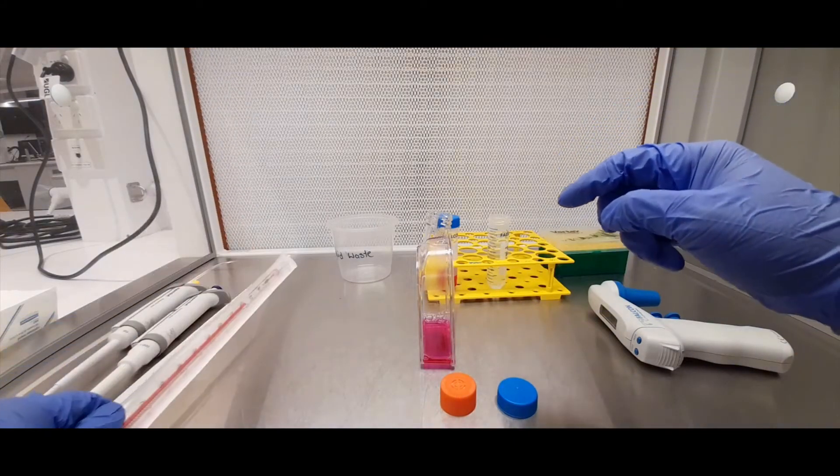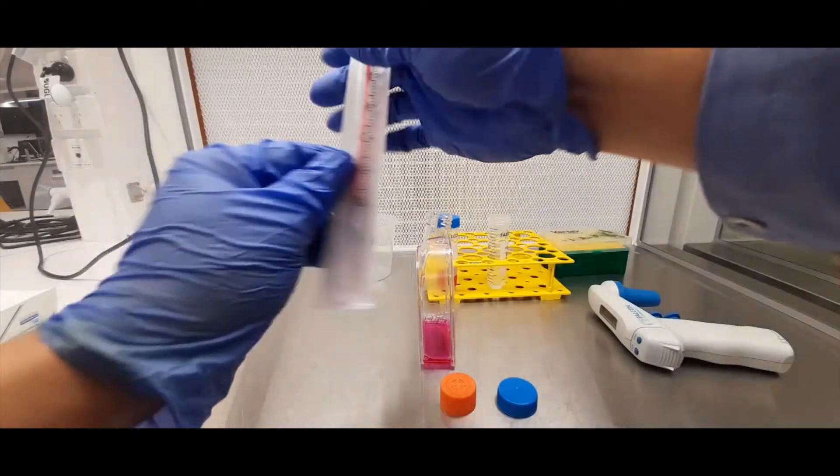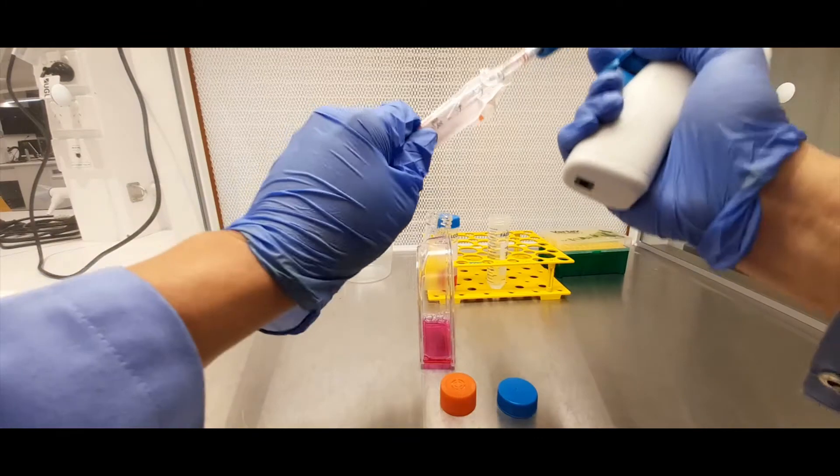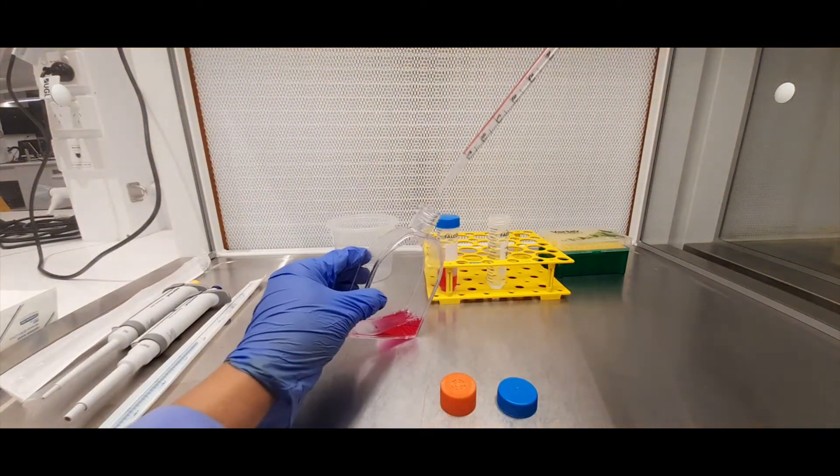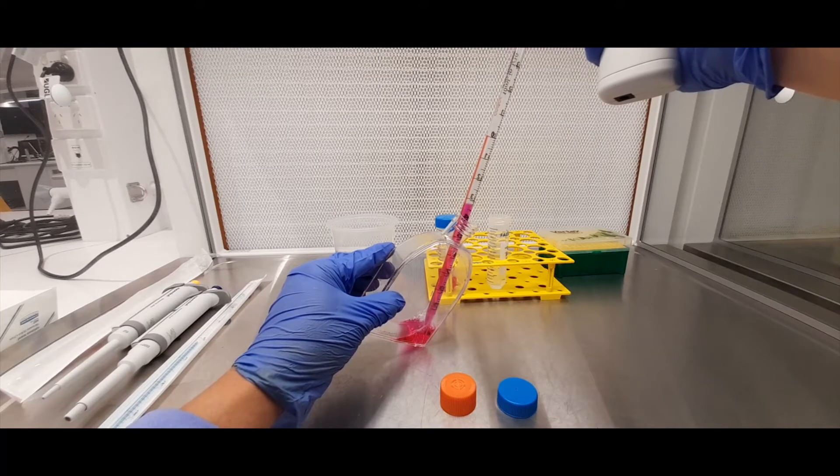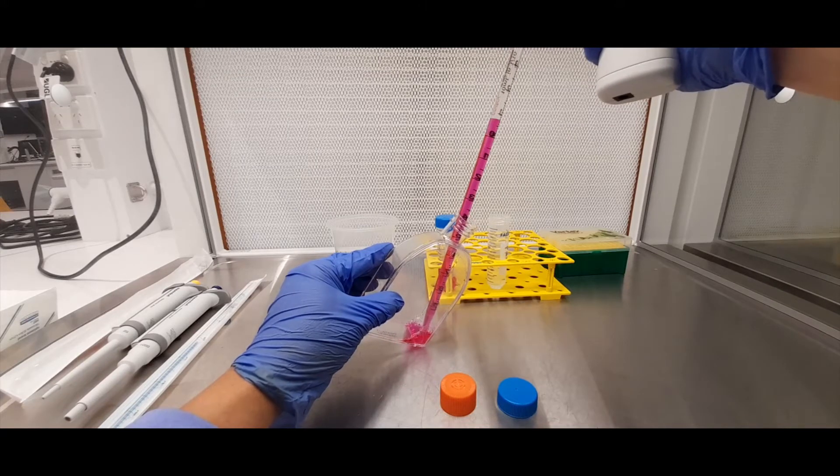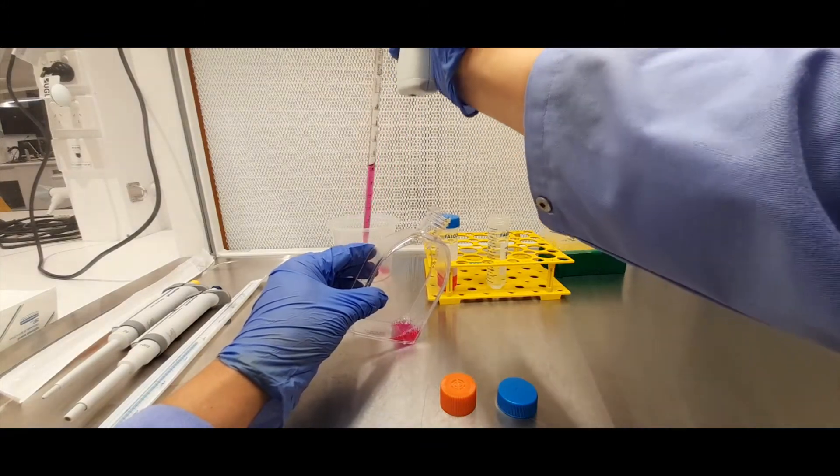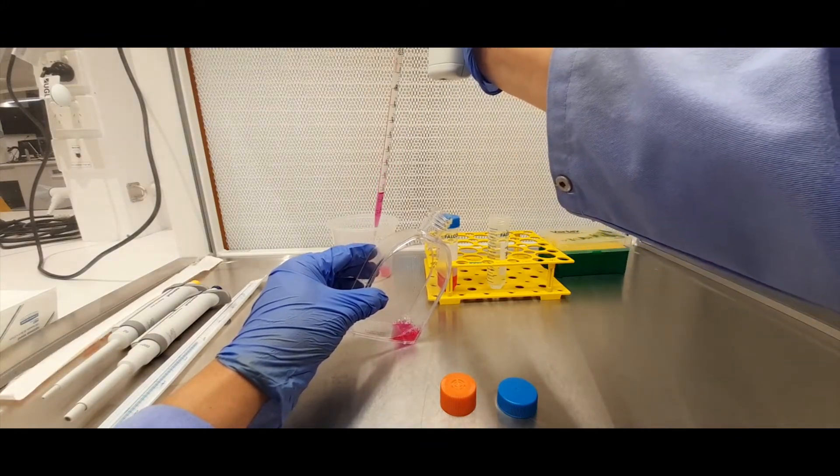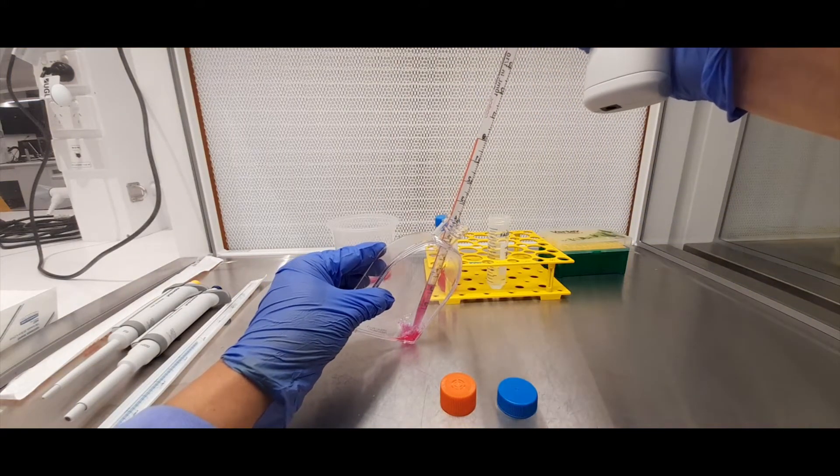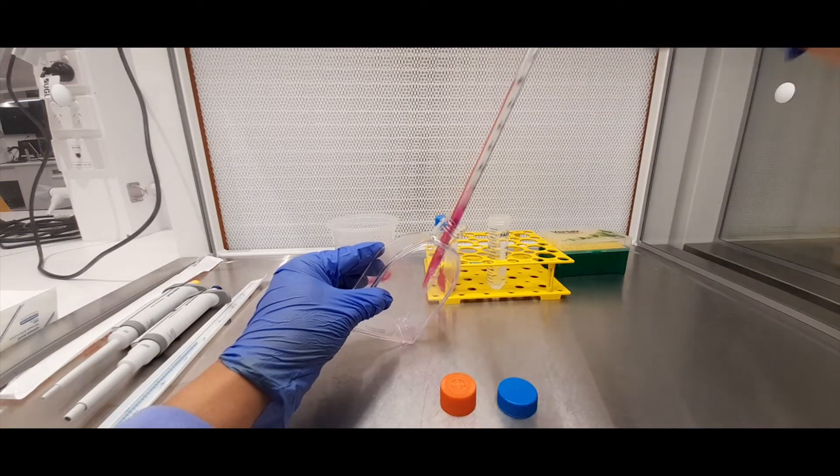So to remove the media from that flask, you get one of these serological pipettes and your pipette aid. You angle the flask so you can then draw up that liquid. And then you can put it into a liquid waste container. And you can do that a couple of times like that till you get rid of all the liquid.